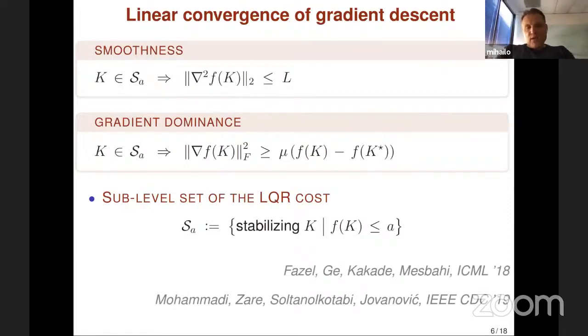What allows you to establish linear convergence for gradient descent is smoothness and gradient dominance property of the LQR cost over its sublevel sets. The way you should think of gradient dominance is really a PL type condition that relaxes strong convexity and extends to a broader class of functions.